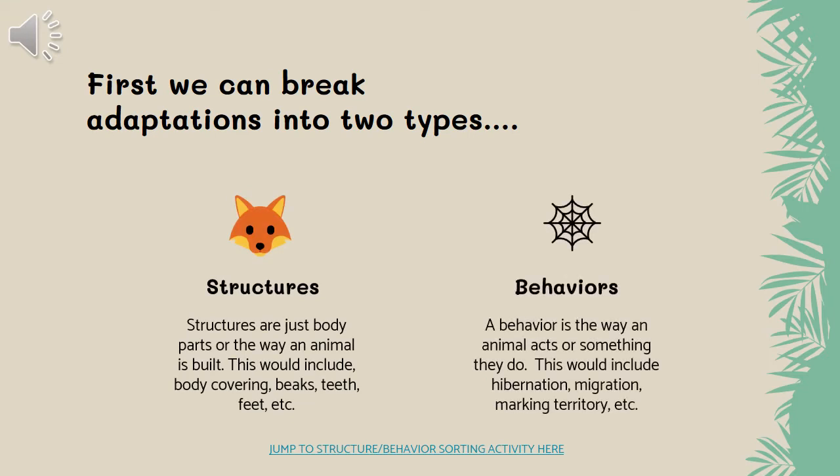Let's start by breaking adaptations into the two major types: structures, or body parts, and behaviors. Structures are really just the way that an animal is built — that can include body covering, beaks, teeth, feet, things like that. Behaviors are a way that an animal acts or something that they do. Sometimes behaviors are things like hibernation, migration, or marking their territory. All of the adaptations are going to fit into one of those two groups.